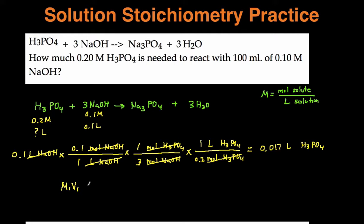You can set M1V1 equals M2V2 and then the coefficients are switched. So if we call this 1 and then we call this 2, the coefficient 1 goes in front of M2V2 and then the coefficient of 2 goes in front of M1V1.